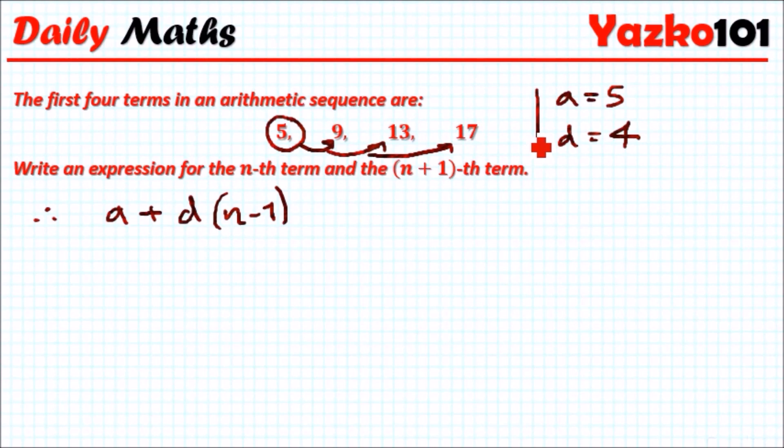So for example, let's try and find the fifth term using the formula. So the fifth term means when n equals 5, right? So let's plug in all the values. So we've got a is 5, firstly, plus d is 4 and we're going to multiply again 5 minus 1.